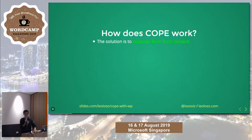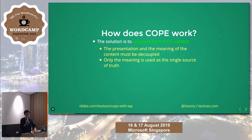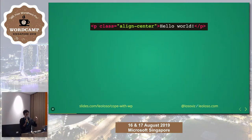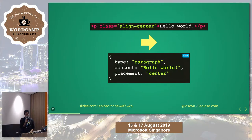How can we do this? The key is to separate form from content. The presentation and the meaning of the content must be decoupled. Only the meaning is used as a single source of truth, and the presentation can be added in another layer specific to that particular medium. For example, we have a simple HTML paragraph — a P tag, centered, content is 'Hello World.' We transform this into an agnostic JSON object: type is paragraph, content is 'Hello World,' placement is center. If it's a screen, I use the placement property. If it's an audio-based device, I ignore it.